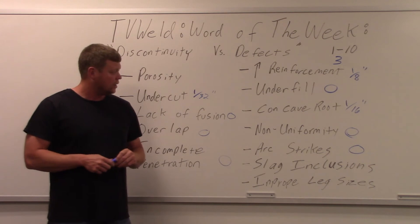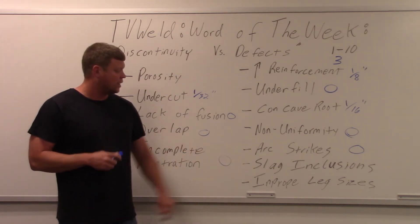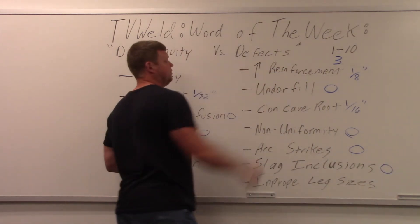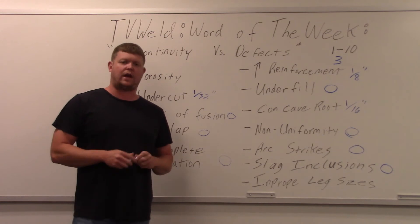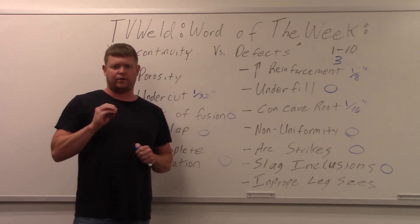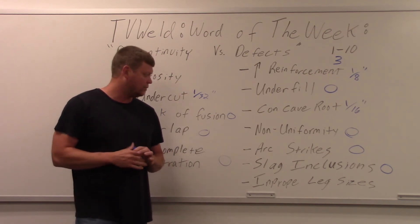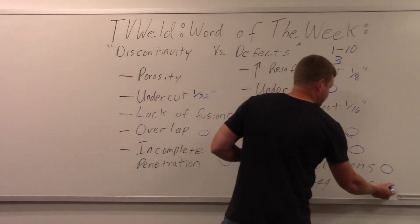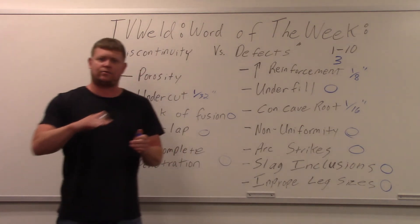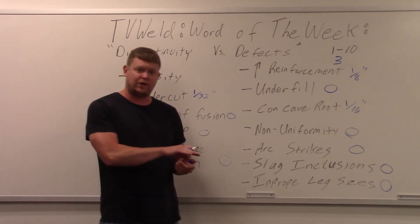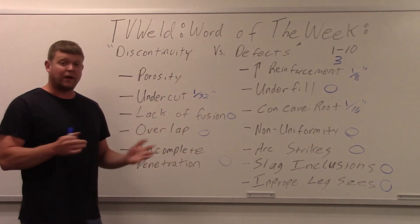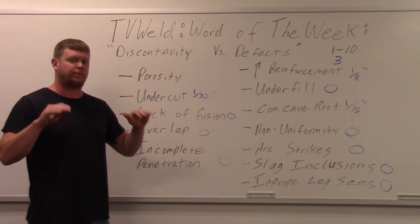Slag inclusions are going to go right to a defect — in order to see them they usually do an x-ray, and they show up pretty clearly on a radiograph, so that's automatic rejection. Improper leg sizes are usually rejectable — if one leg size is way off and the other one is way short, that's a defect. Keep in mind all the stuff in blue depends on the code; I'm just going off the typical standards I've seen.